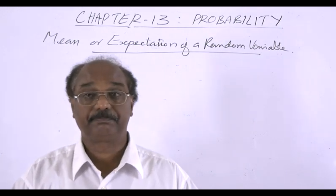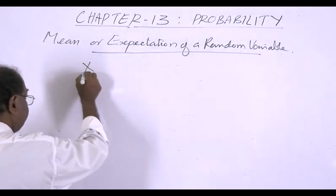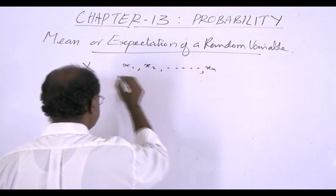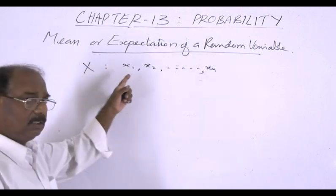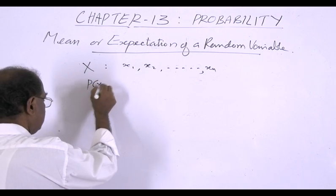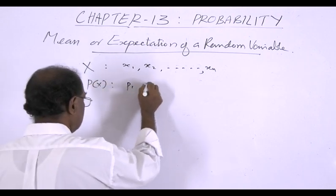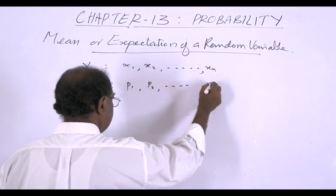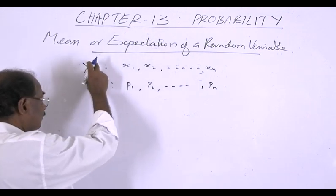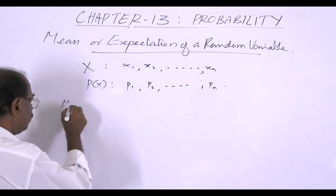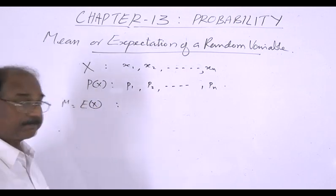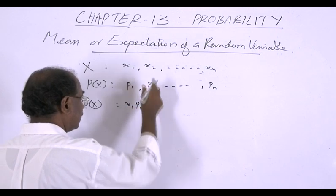It is defined in this way. Suppose x is a random variable with values x1, x2, x3, etc., up to xn, and there are corresponding probabilities p1, p2, etc., up to pn. Then the expectation of x, or the mean of x — denoted by E(x) — is x1·p1 plus x2·p2 plus etc.